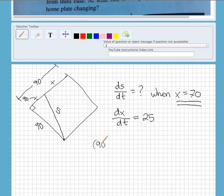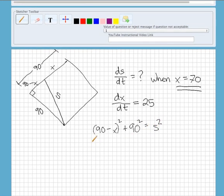Okay, so writing out an equation here to relate all this, we use Pythagorean theorem using this triangle, so (90 - x)² plus 90² equals s².